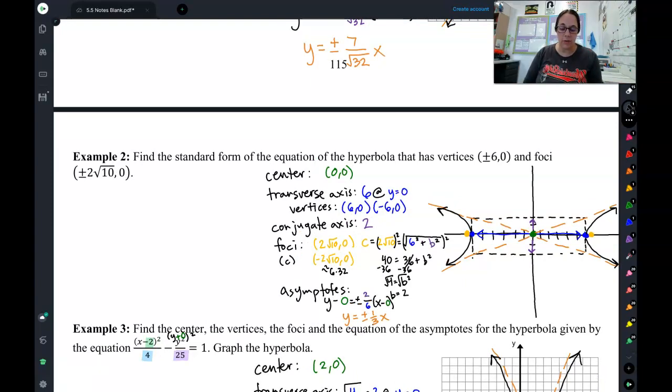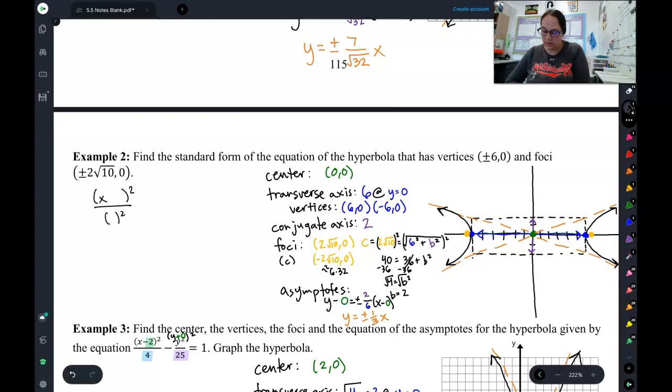Now that I have it graphed, I know everything I've got. I can write the equation. First thing I need to decide with my equation is, is this X squared first or Y squared first? Because my branches go side to side, I know that the X has got to come first. So, here's the form of the hyperbola equation.